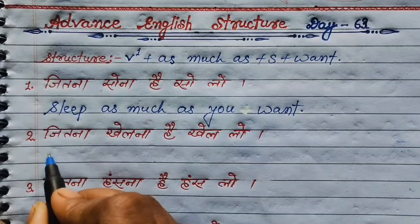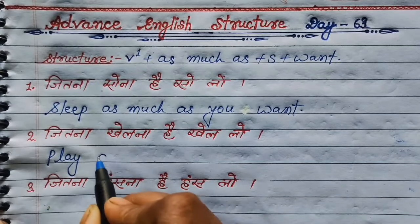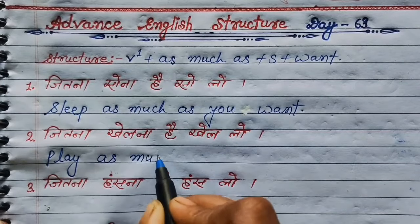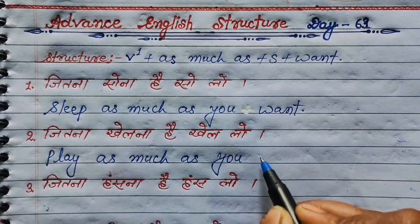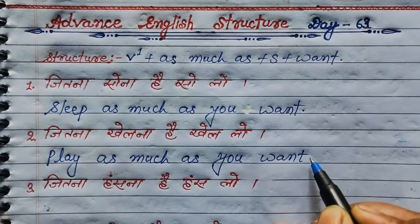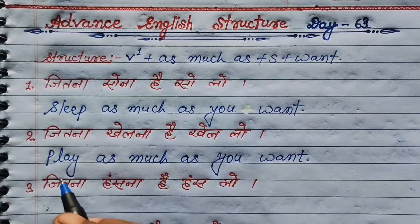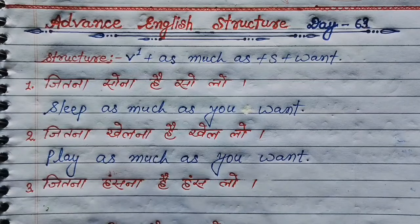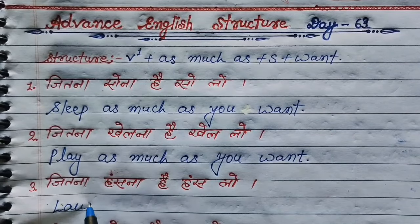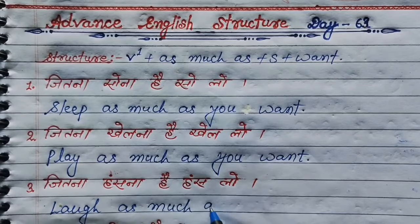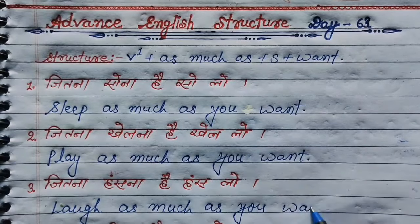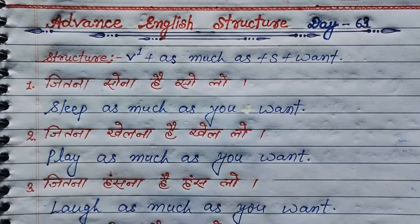Next sentence: जितना खेलना है, खेल लो। तो खेलना की English play होती है। Play, then as much as, then subject you, then want. Play as much as you want. जितना हसना है, हस लो। तो हसना की English laugh होती है। Laugh as much as you want.